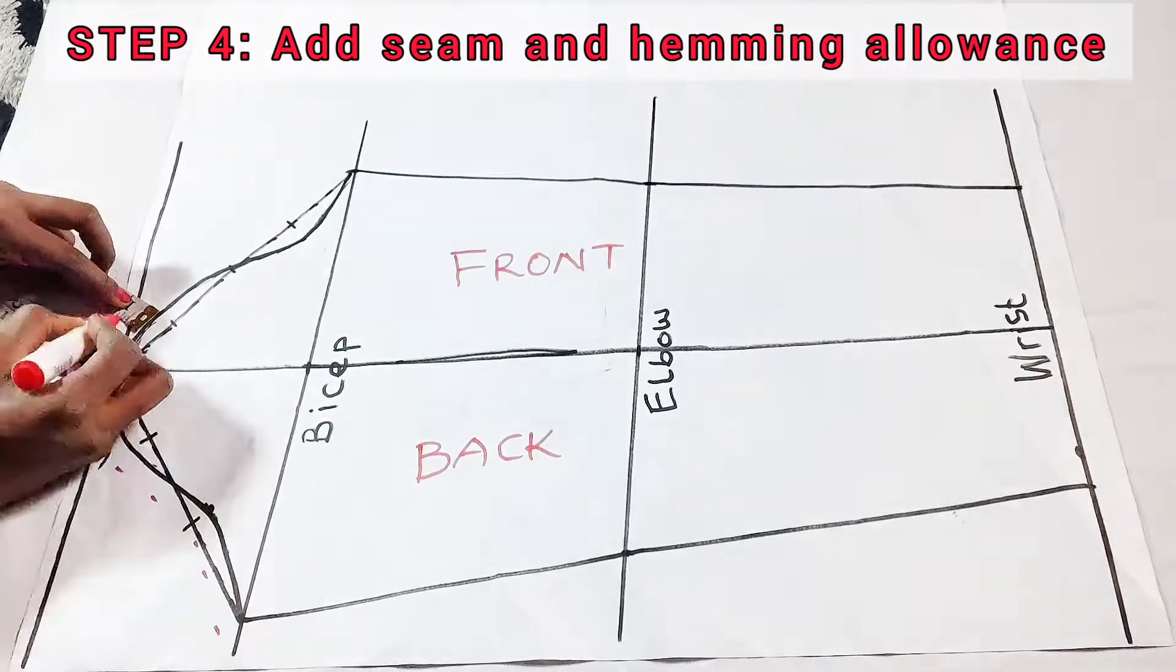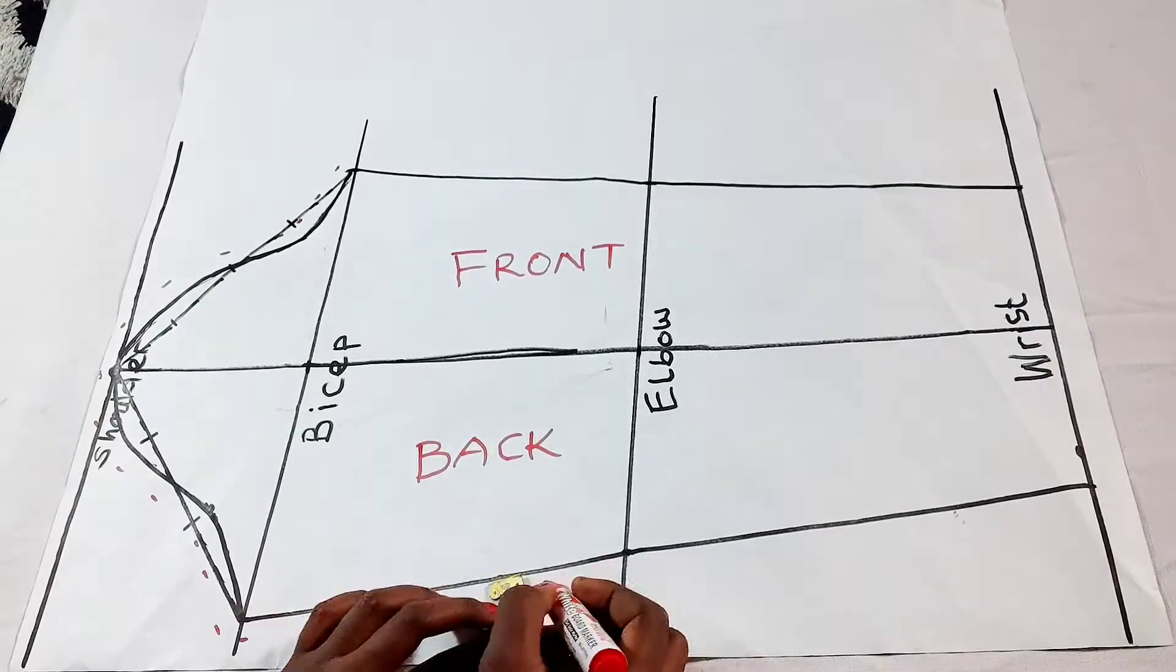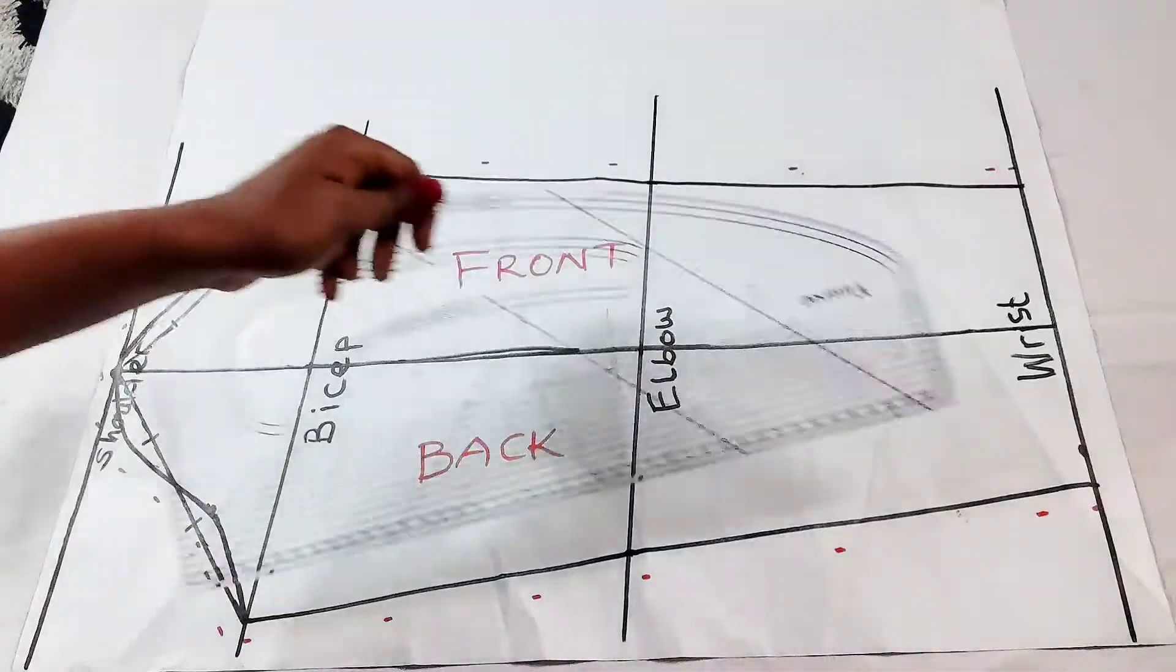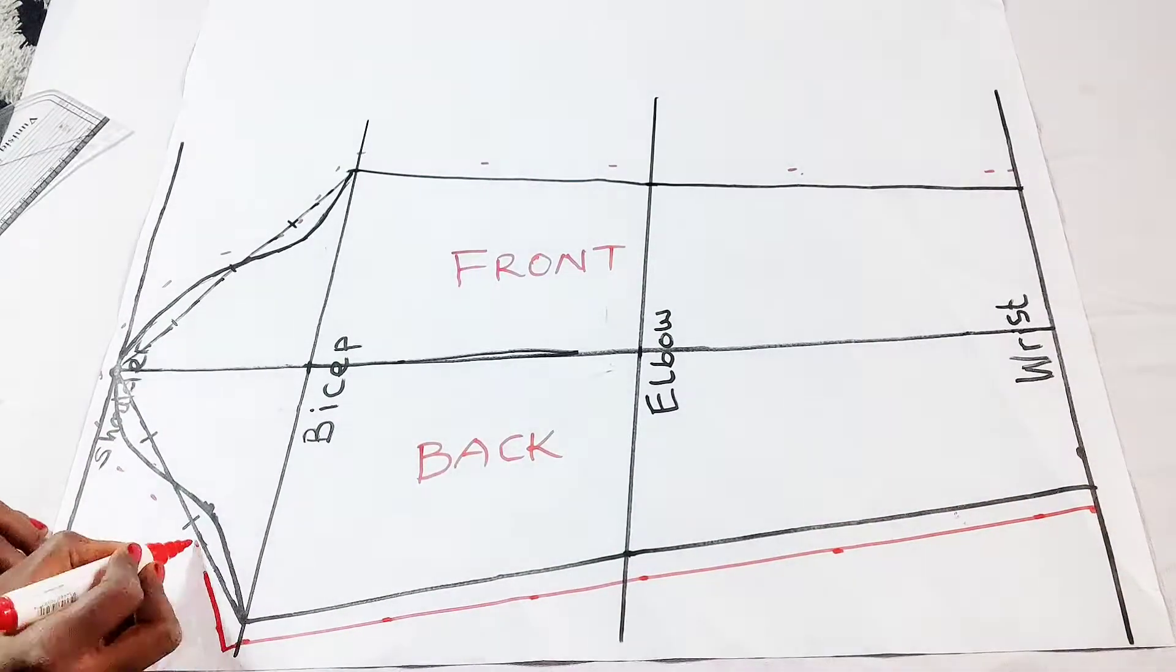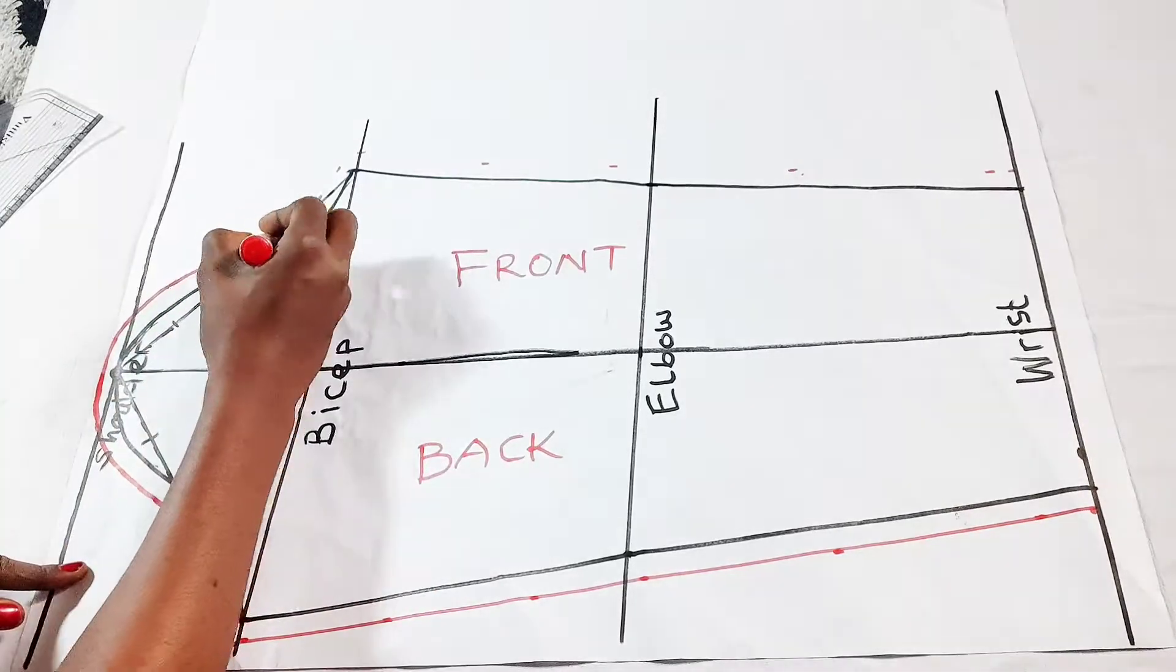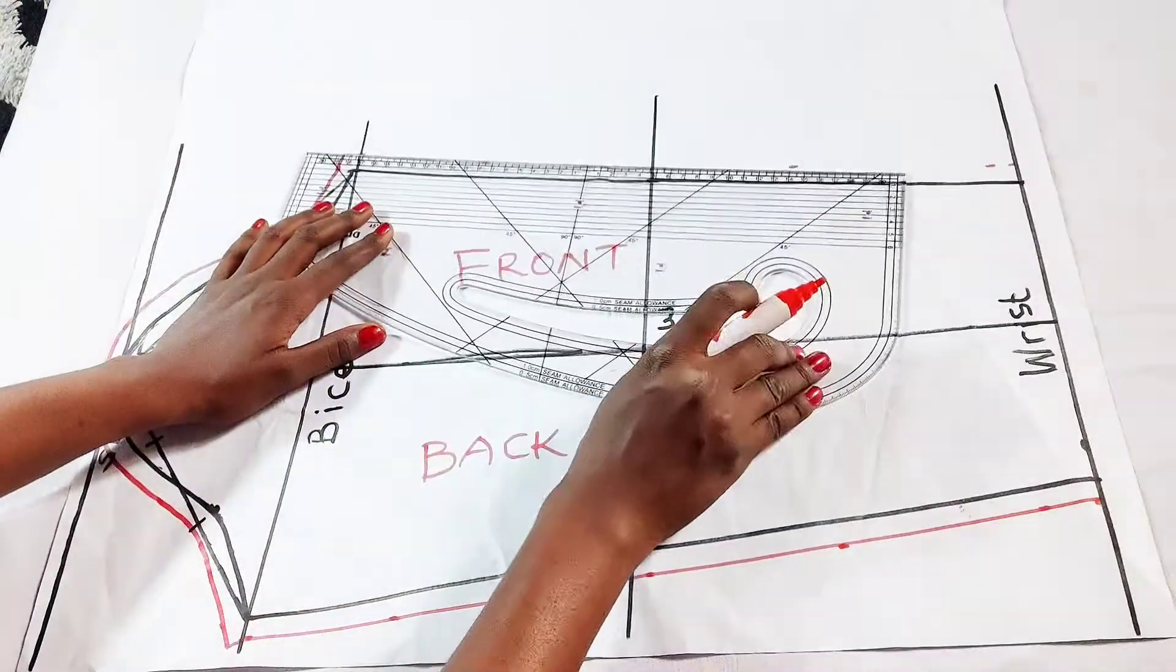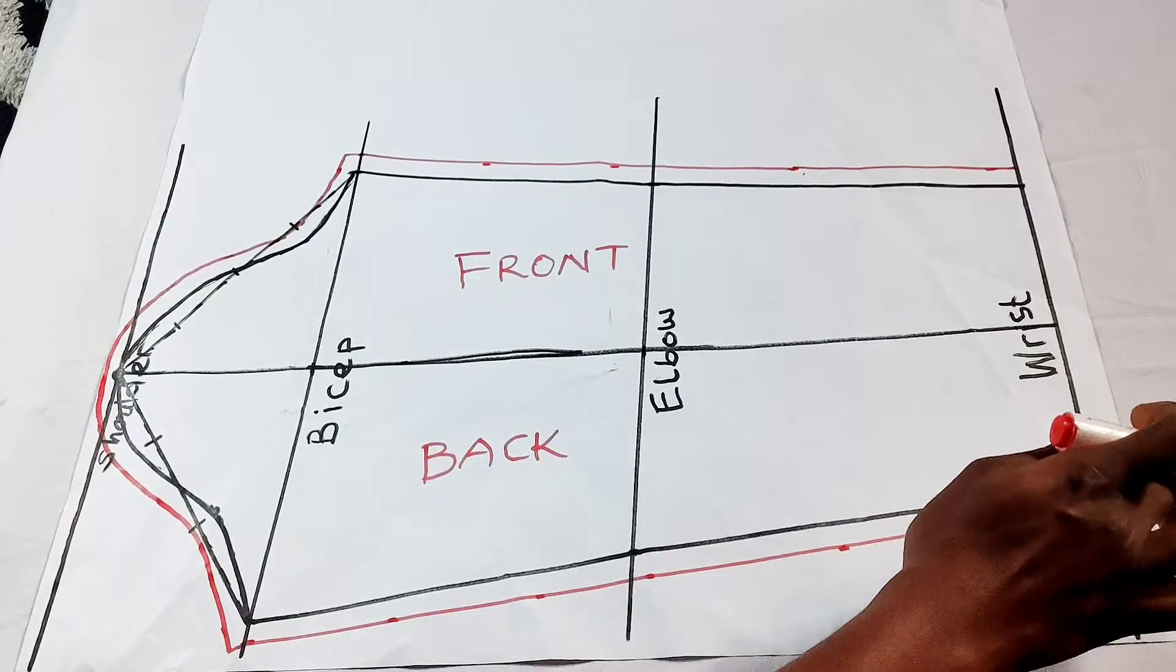Next, we're just going to add half-inch allowance on all sides of our sleeve for ease. I'm just going to be joining all the parts like so. And then, of course, we are also adding half-inch allowance at the bottom for hemming.